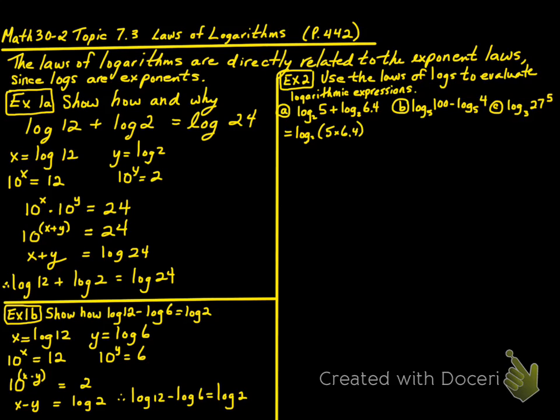We're going to multiply them, so log₂(5 × 6.4) = log₂(32).